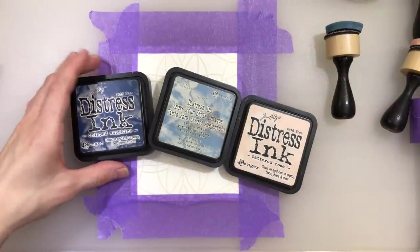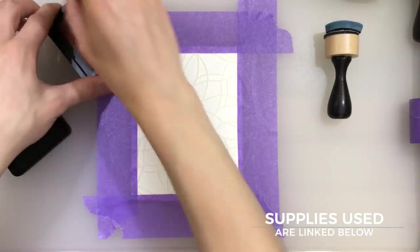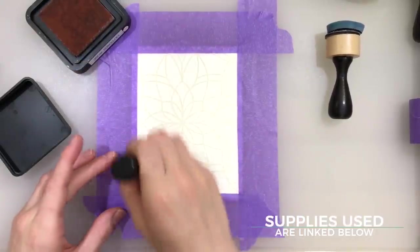So I'm taking a Simon Says Stamp stencil here. This is the Carolyn stencil and I'm taping it down with purple tape from ThermaWeb onto a hardboard from Art Impressions just to make sure it stays in place.